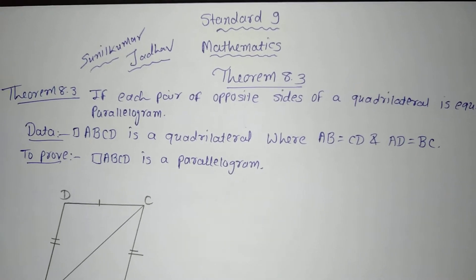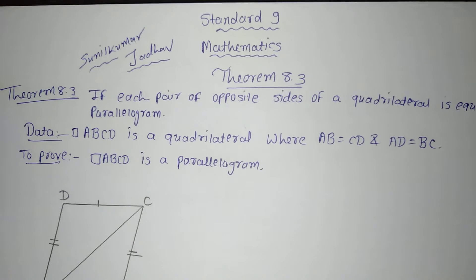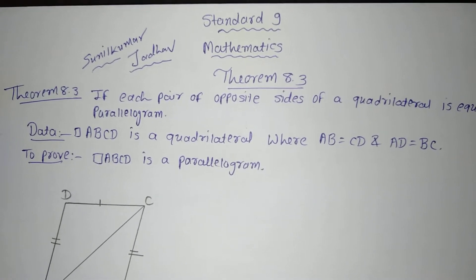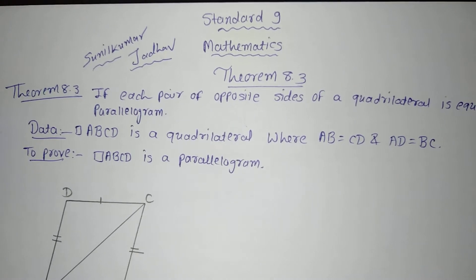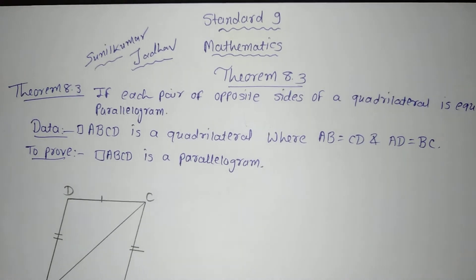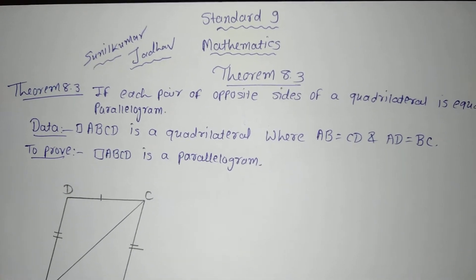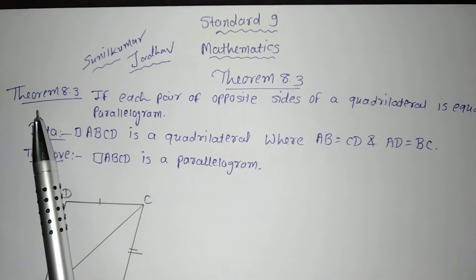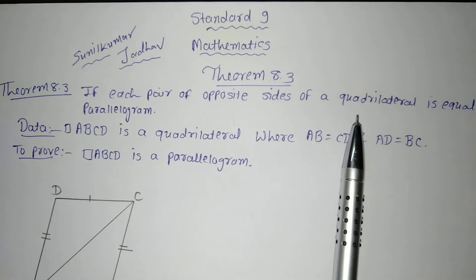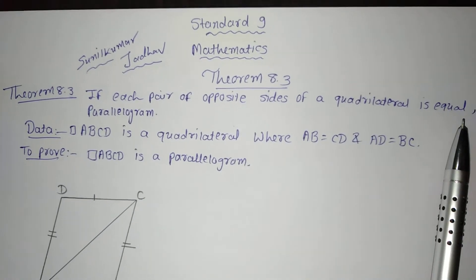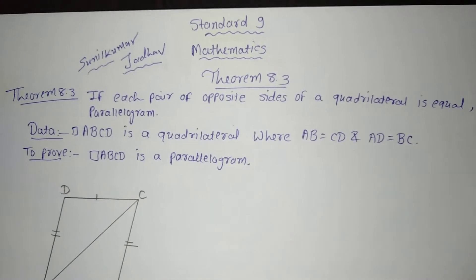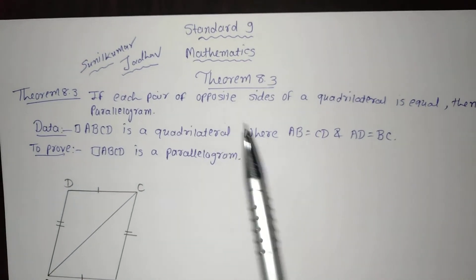In this video we are going to learn one important theorem of standard 9 mathematics — Theorem 8.3. This theorem is not given with proof in the NCERT textbook, so here I am providing you the proof. Please carefully watch this video and learn this theorem with the proof. The statement of Theorem 8.3 is: if each pair of opposite sides of a quadrilateral is equal, then it is a parallelogram.